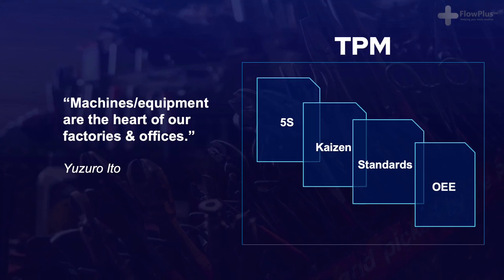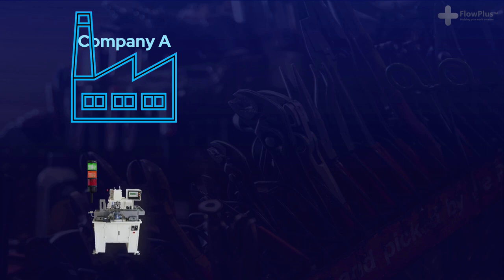In order to explain TPM I'll start by comparing how two different companies operate. At Company A, a machine has been leaking oil for the past week and finally breaks down. The machine operator calls the maintenance team to come and repair it. The maintenance team take over two hours to arrive as they are busy firefighting other problems and breakdowns.